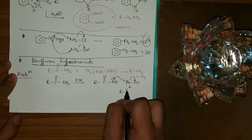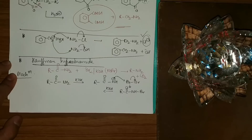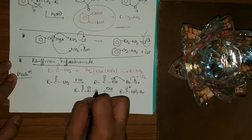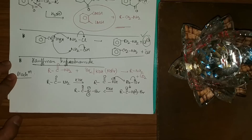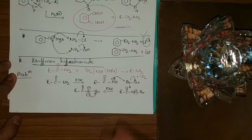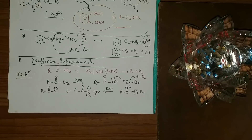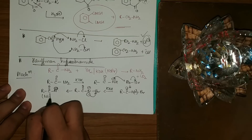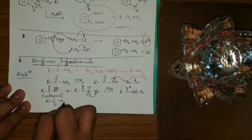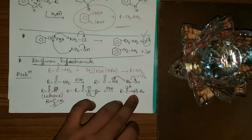Br2 is then used — the nitrogen lone pair attacks Br2, taking out one Br, giving R-CO-NHBr. I again apply KOH: the most acidic hydrogen is removed giving R-CO-N⁻Br. Since Br⁻ is a very good leaving group, it leaves, giving R-CO-N: — this intermediate is called a nitrene.